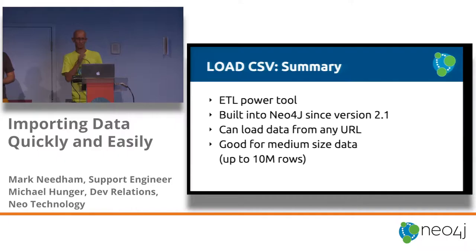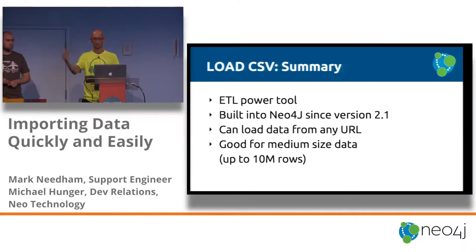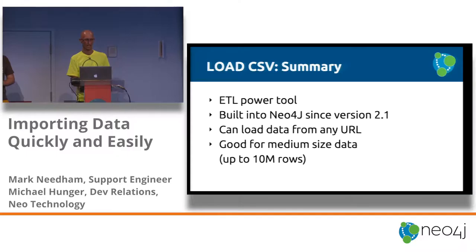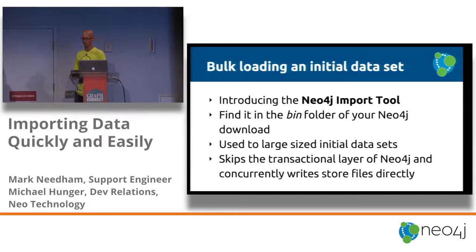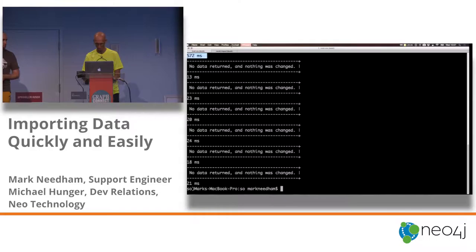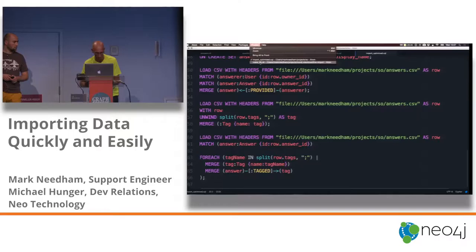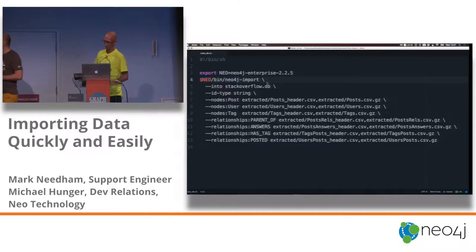To quickly wrap up that section: LOAD CSV is like an ETL power tool — you can take CSV files and create graphs. You can also just explore your CSV files with it, doing count operations without any actual Neo4j graph writes. It's been in Neo4j for about 18 months. Depending on your level of patience, it's good for up to 10 million rows. For medium-sized data it works pretty well, but as datasets get bigger, you probably want to do something else.